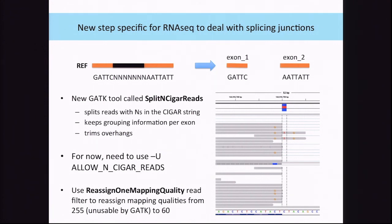When we run this tool, since it's the first GATK tool we are running in the pipeline, we also run a read filter called ReassignOneMappingQuality. This filter takes reads that have a mapping quality of 255 and changes them to 60. The value 255 is what some RNA aligners use to indicate that a read was uniquely mapped, but it's not a standard value that GATK knows how to process. So instead we use 60, which is the highest mapping quality allowed in the GATK scheme. Since this is the first GATK tool in the pipeline, we apply this read filter at that step.